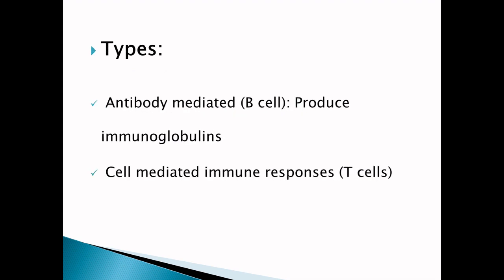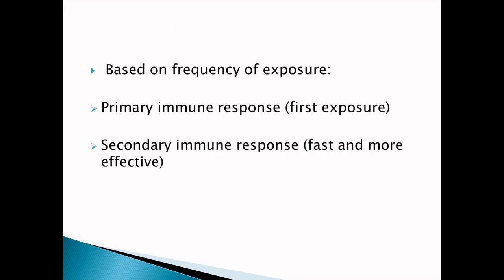So there are two types: one mediated by B cells where immunoglobulins (antibodies) are produced, and the other — cell-mediated immune response — mainly mediated by T cells, producing cytokines. Acquired immunity can also be classified by the type of activation into active immunity and passive immunity. Active immunity is developed by exposure to a pathogen, while passive immunity is developed when someone receives prepared antibodies.